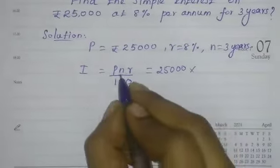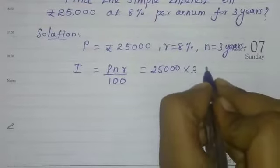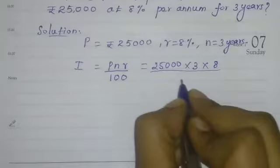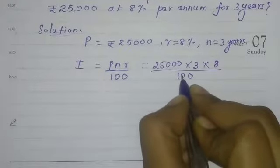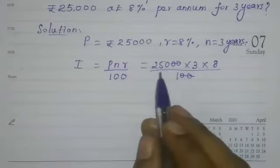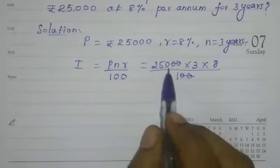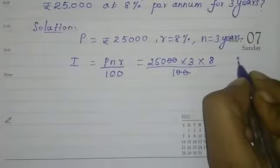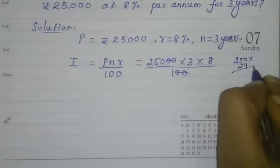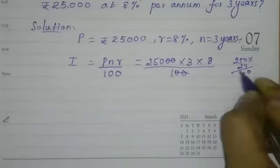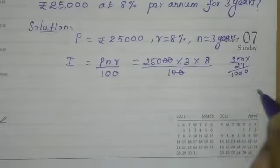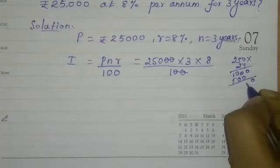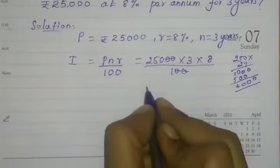Into n, 3 years, rate of interest r, 8%, divided by 100. Then cut it, then multiply 250 into 3 into 8. 3 times 8 is 24, 250 into 24 is 6,000.